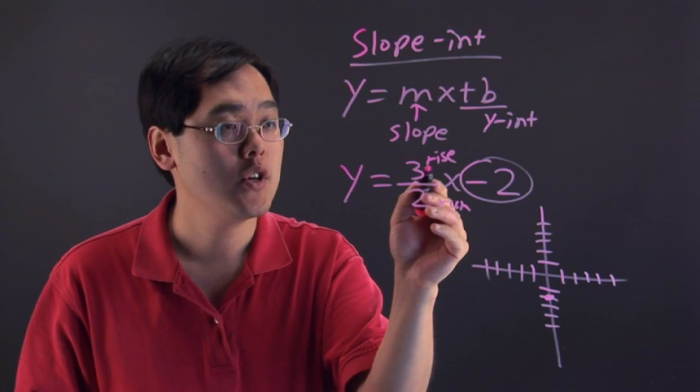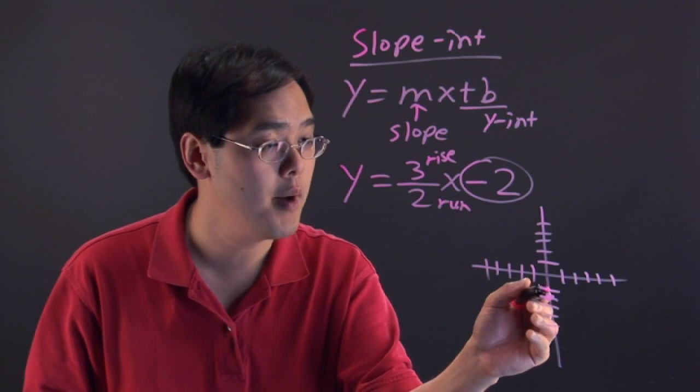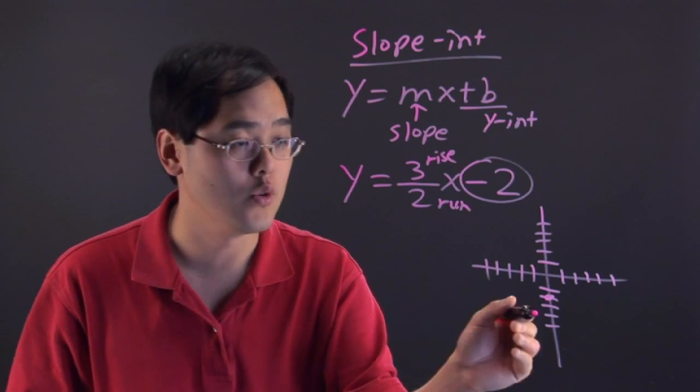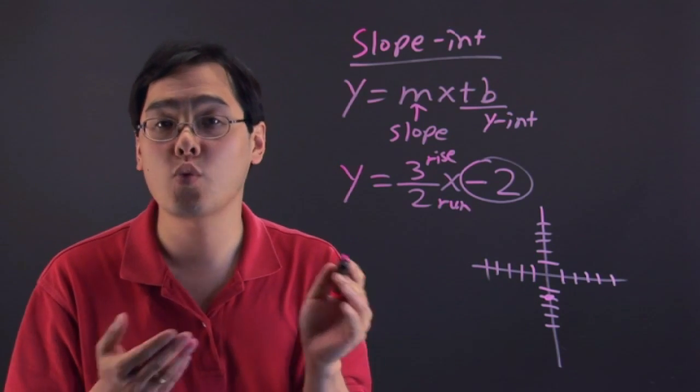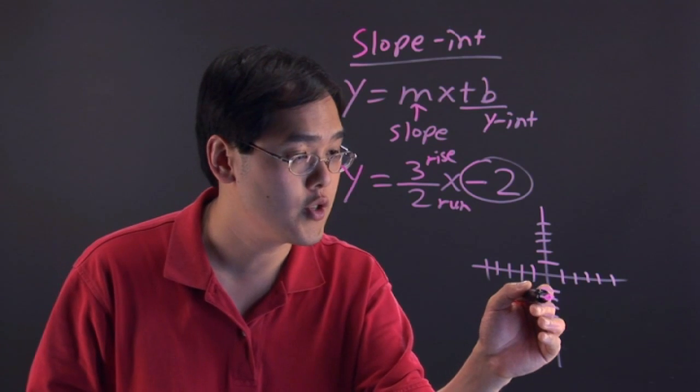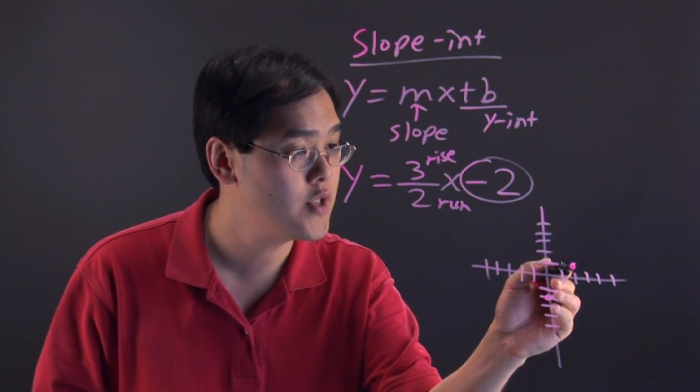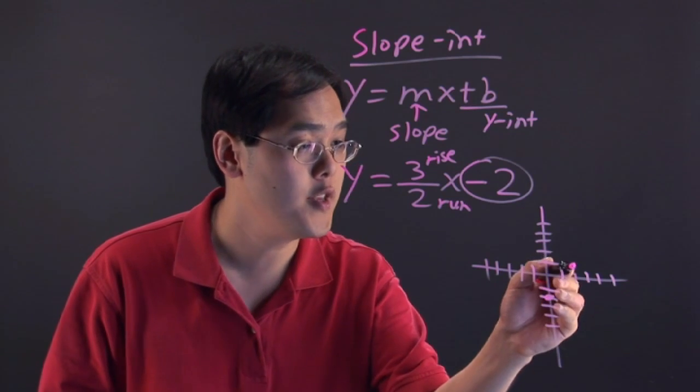That means you rise 3. From this point, you go up 3, but you don't graph the point yet until you finish running 2. Running 2 means you go to the right two places. So that means you go up 3, and then right two, and then once you're done with both rise and run, then you plot the next point.